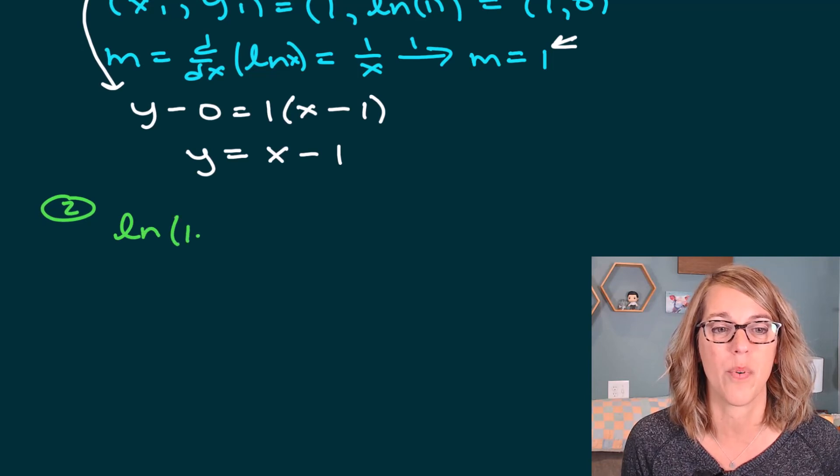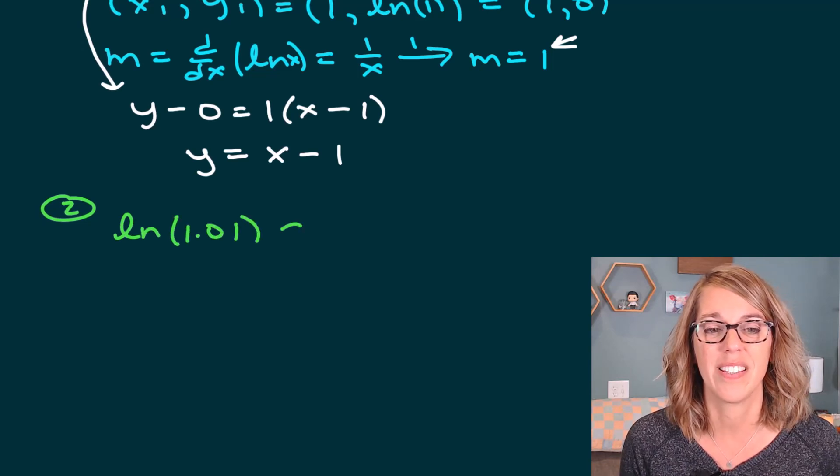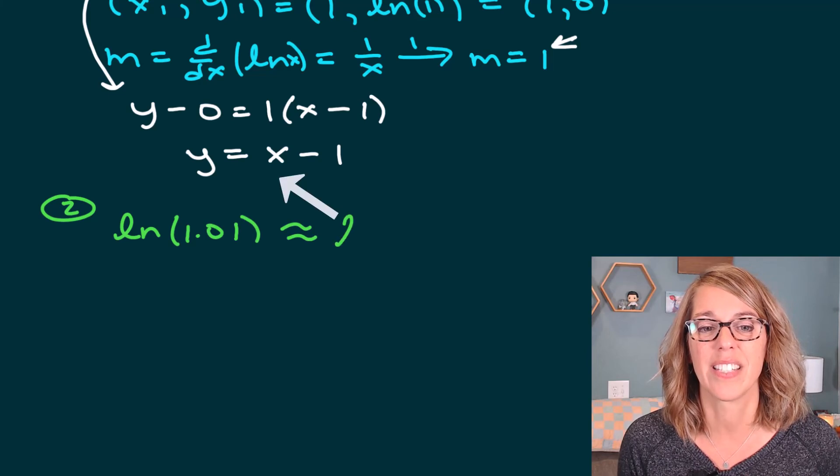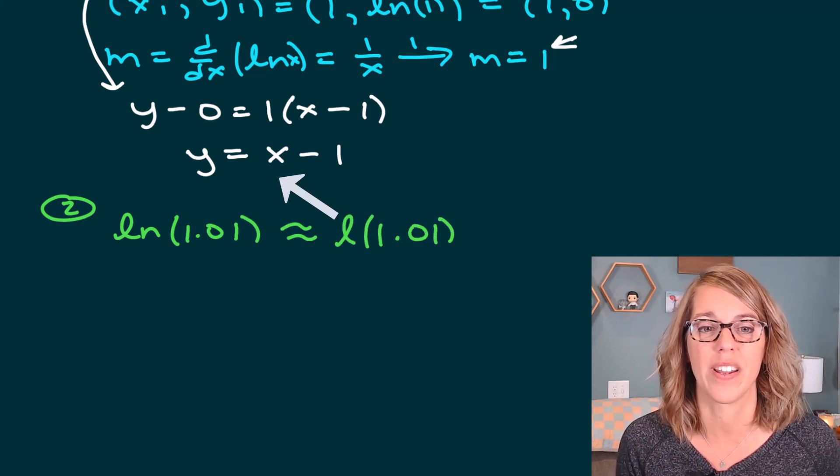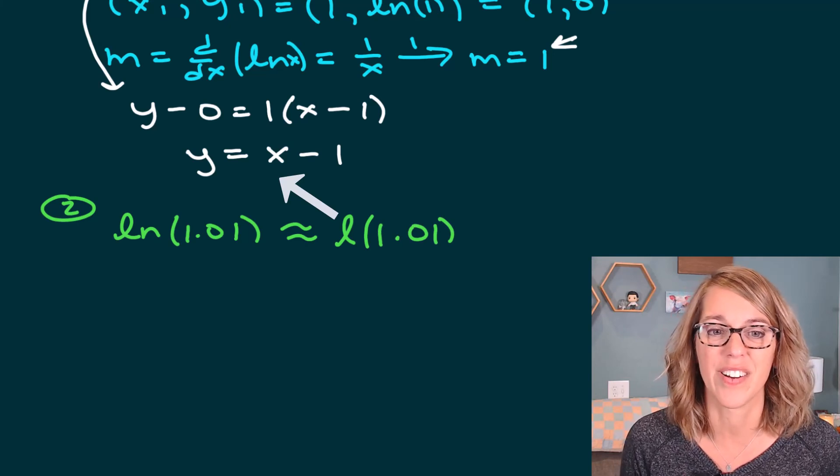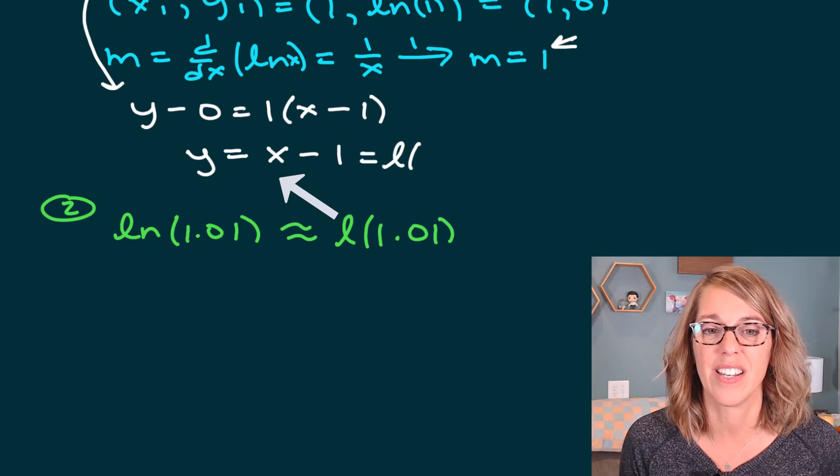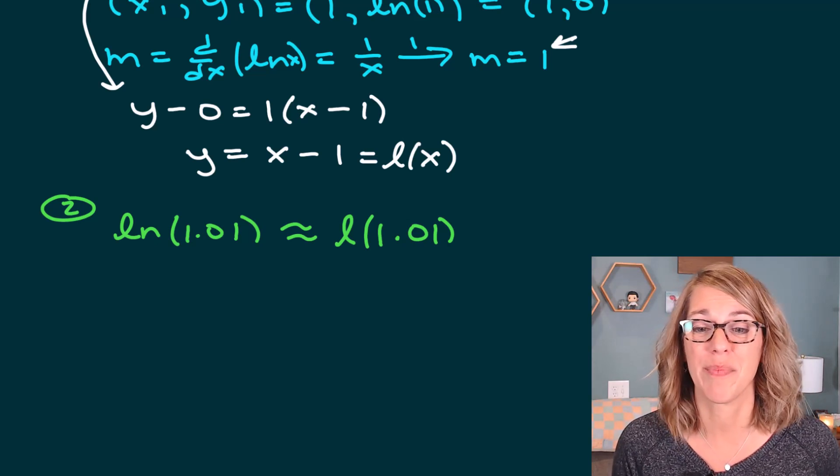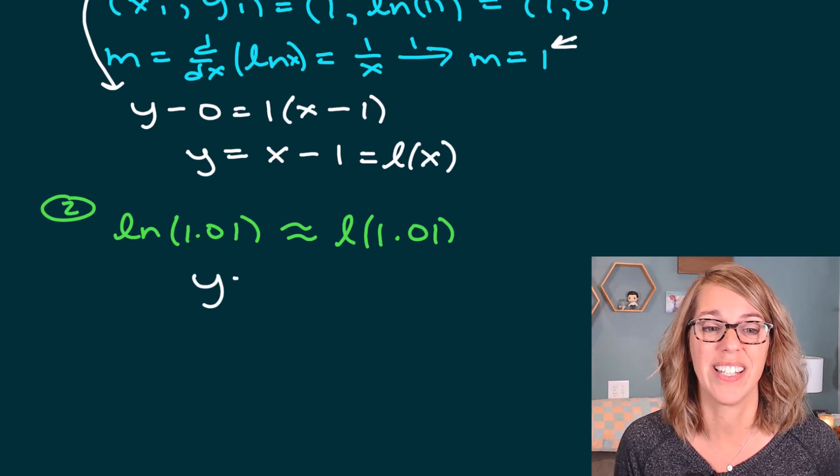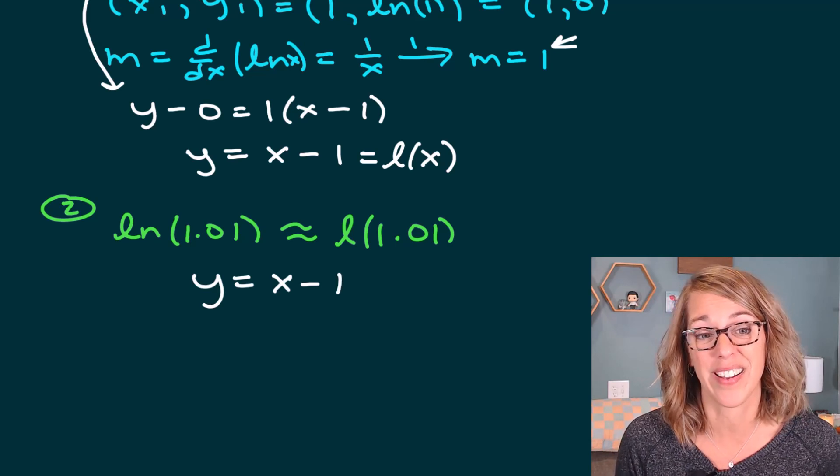So the natural log of 1.01 is approximately this linearization at 1.01. And what I have up here is the linearization of x. Well, this makes my job so incredibly easy. I just have the linearization y equals x minus 1.